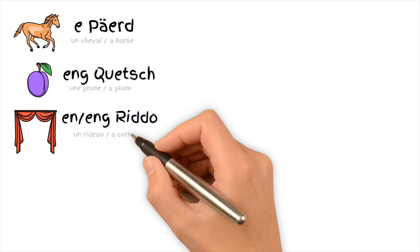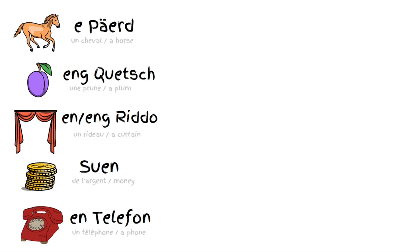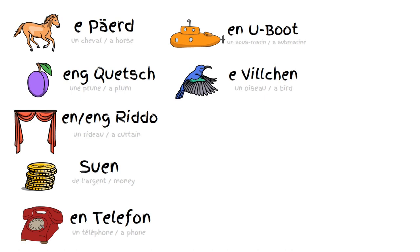R — en oder eng rideau. S — zoen. T — en telefon. U — en u-boot. V — e filtschen.